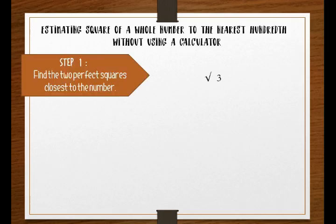Next, let's estimate the square root of a whole number to the nearest hundredth without using a calculator. We will estimate the square root of 13 to the nearest hundredth. Step one: find the two perfect squares closest to the number.